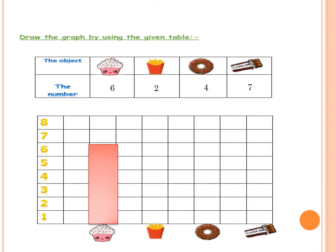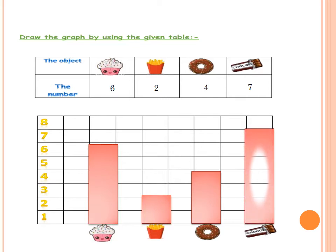The next one is the french fries. How many french fries we have? 2. Let's color 2 squares. Then, the donuts. We have 4 donuts. So, we will color 4 squares up to number 4 in the table. And the next one is the chocolate.